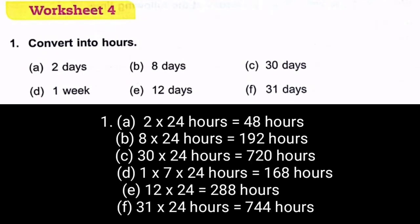Convert into hours: (a) 2 days = 2 × 24 = 48 hours. (b) 8 days = 8 × 24 = 192 hours. (c) 13 days = 13 × 24 = 312 hours... wait, that should be verified. Questions (d), (e), and (f) you have to complete yourself using the same method.